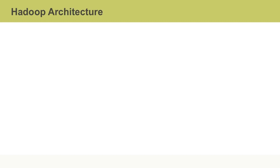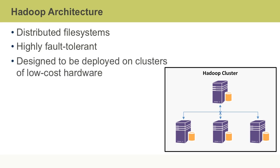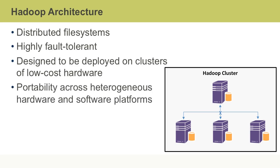Key architectural characteristics of Hadoop include its distributed file system design, which means the dataset is partitioned across a number of separate machines. Hadoop is highly fault tolerant, and its file system can run on low-cost regular PCs. In addition, computers manufactured by multiple vendors can be used to make a cluster. Hadoop's distributed file systems are network-based.